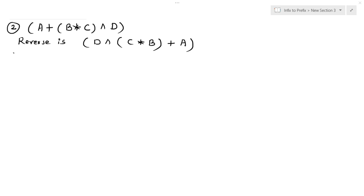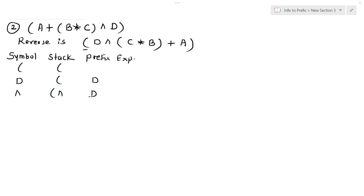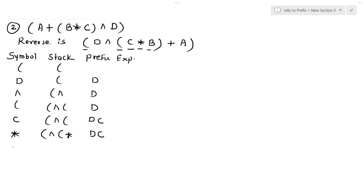Now let's solve the reversed expression using three columns: symbol, stack, and expression. The left parenthesis goes into the stack. d is an operand — it goes into the prefix expression. The exponential operator goes into the stack. The next left parenthesis goes into the stack. c is an operand — it goes into the prefix expression. Multiplication is an operator — it goes into the stack. b is an operand — it goes into the prefix expression. Expression so far: d, c, b.